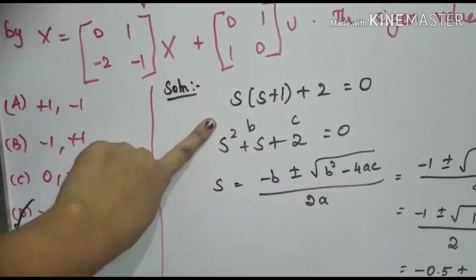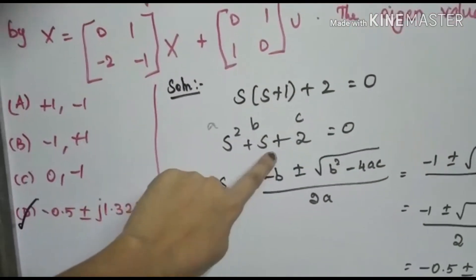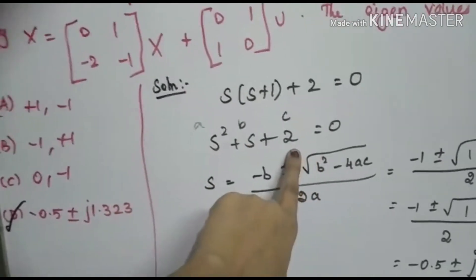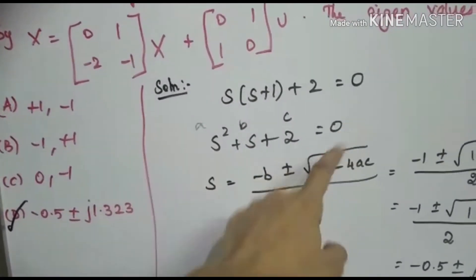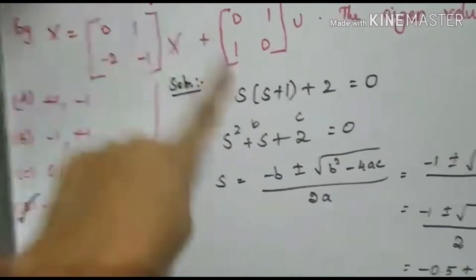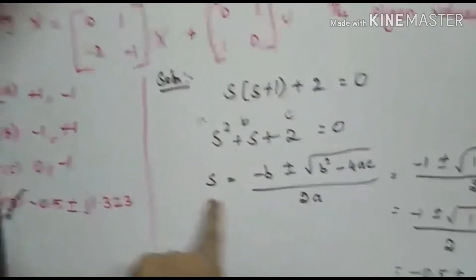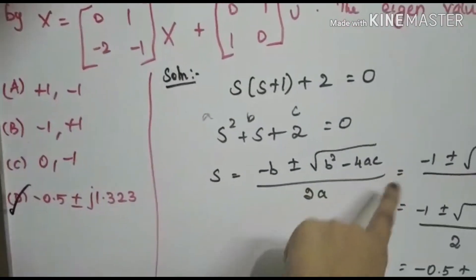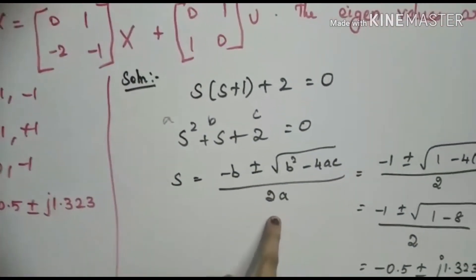See here, coefficient of S squared is A, coefficient of S is B, coefficient of the constant term is C. Now, S equals minus B plus or minus root of B squared minus 4AC divided by 2A.